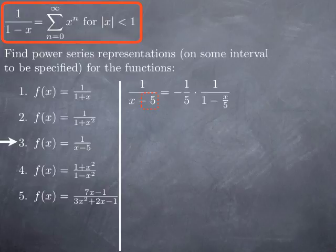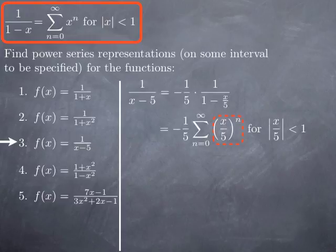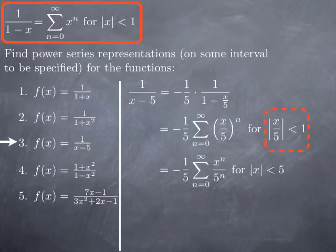Now I have something of the form 1 over 1 minus something, with first term 1 and common ratio x over 5. I get negative 1 fifth times the series from 0 to infinity of x over 5 to the n, valid as long as the common ratio in absolute value is less than 1. The general term x over 5 to the n can be rewritten as x to the n divided by 5 to the n, and the condition absolute value of x over 5 less than 1 is the same as absolute value of x less than 5. Therefore, 1 over x minus 5 equals negative 1 fifth times the series from 0 to infinity of x to the n divided by 5 to the n, valid on the open interval from negative 5 to 5.